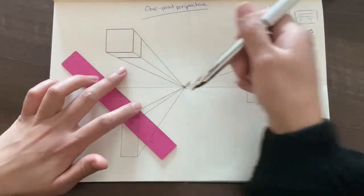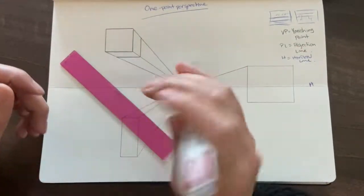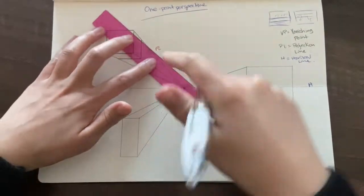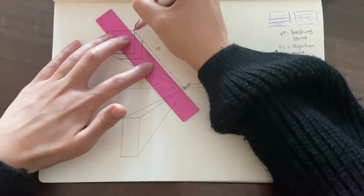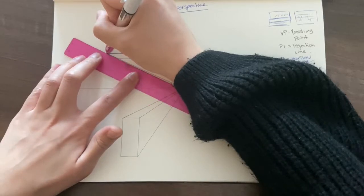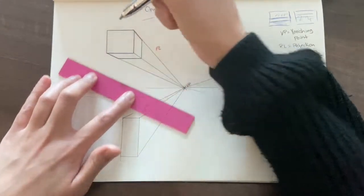Now obviously these are projection lines, so with the projection line, you just need to join it up like so.